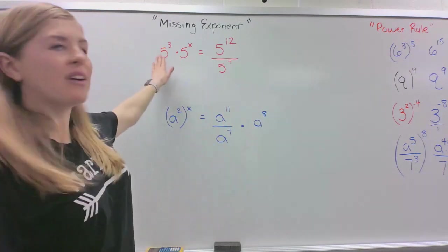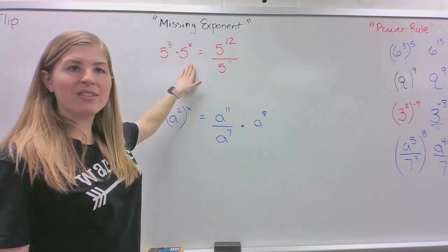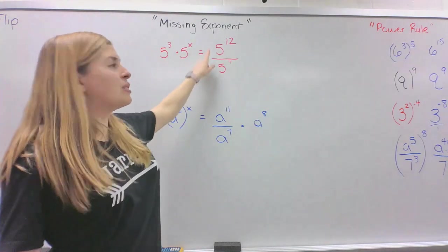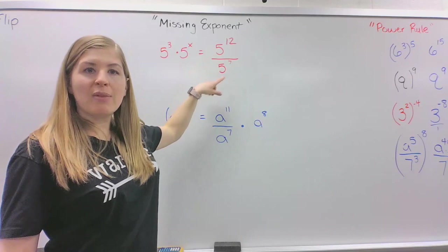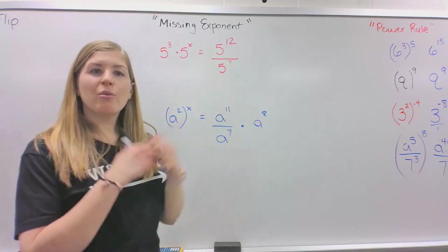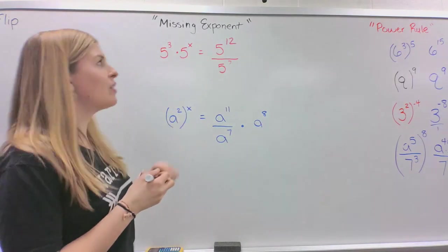So we have 5 to the 3rd power times 5 to the x, the missing exponent, equals 5 to the 12th power divided by 5 to the 7th power. So we're going to use our properties, use our rules to simplify.